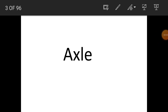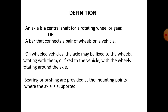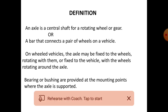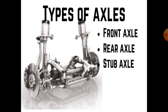Good morning. Today we are starting our second unit on axles. The definition of axle is a central shaft for a rotating wheel or gear. Another definition: a bar that connects a pair of wheels on a vehicle. On wheeled vehicles, the axle may be fixed to the wheels rotating with them, or fixed to the vehicle with the wheels rotating around the axle. Bearings or bushings are provided at the mounting points where the axle is supported.